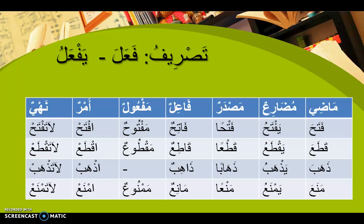قَطَعَ (qata'a) - he has cut. قَطَعْتُ (qata'tu) - I cut. قَطَعْنَا (qata'na) - we have cut. قَطَعْتَ (qata'ta) - you have cut. قَطَعْتِ (qata'ti) to a female - you have cut. Mudari: يَقْطَعُ (yaqta'u) - he is cutting. أَقْطَعُ (aqta'u) with hamza - I am cutting. نَقْطَعُ (naqta'u) - we are cutting. تَقْطَعُ (taqta'u) - you are cutting. تَقْطَعِينَ (taqta'ina) to a female - you are cutting. Masdar: قَطْعاً (qat'an) - cutting. قَاطِعٌ (qati'un) - the one who cuts. مَقْطُوعٌ (maqtu'un) - what has been cut. Amr: اِقْطَعْ (iqta') - cut! Nahy: لَا تَقْطَعْ (la taqta') - don't cut!